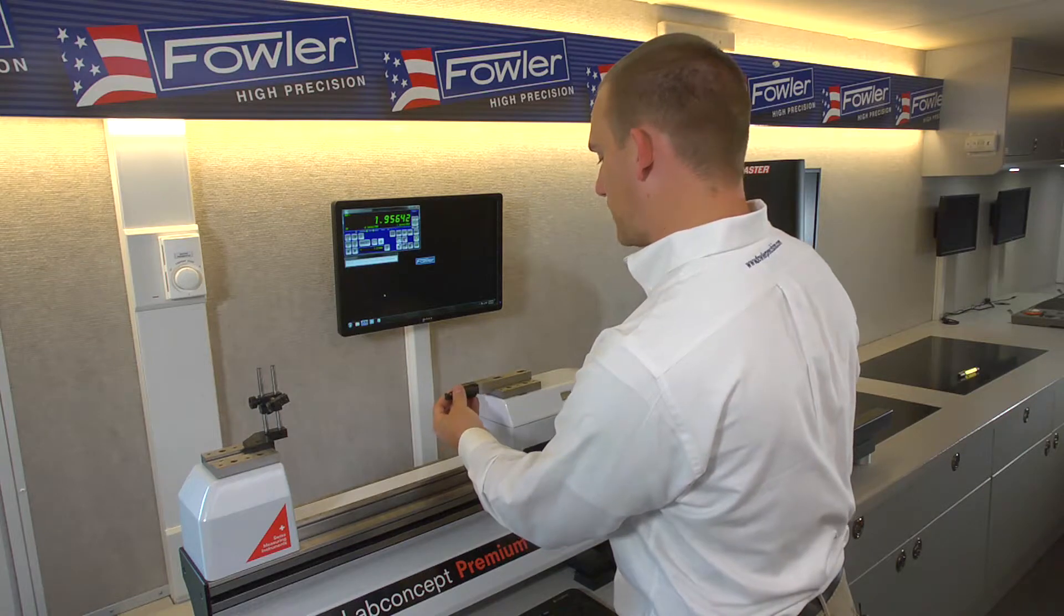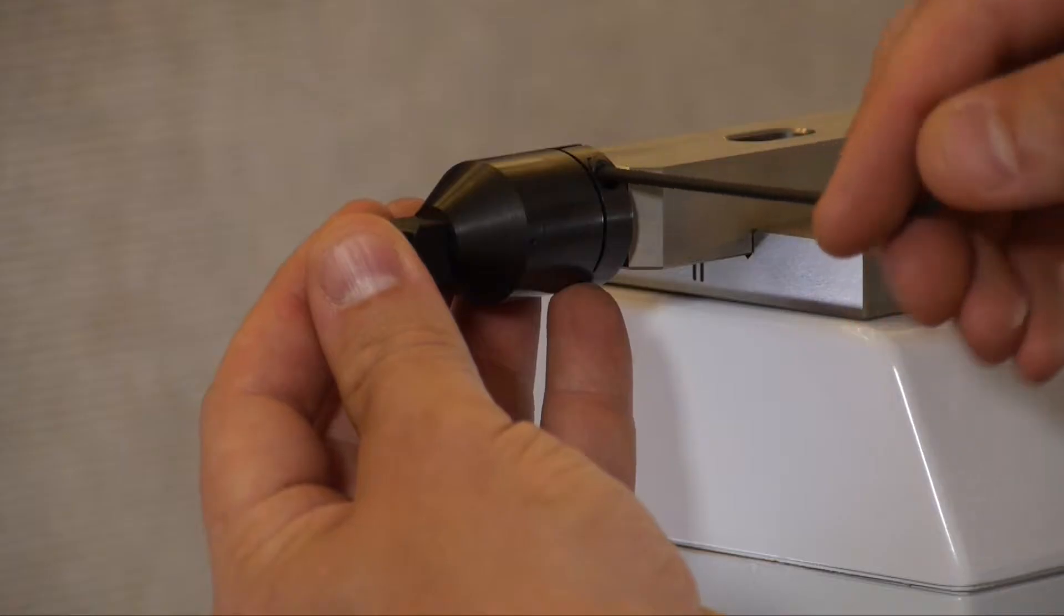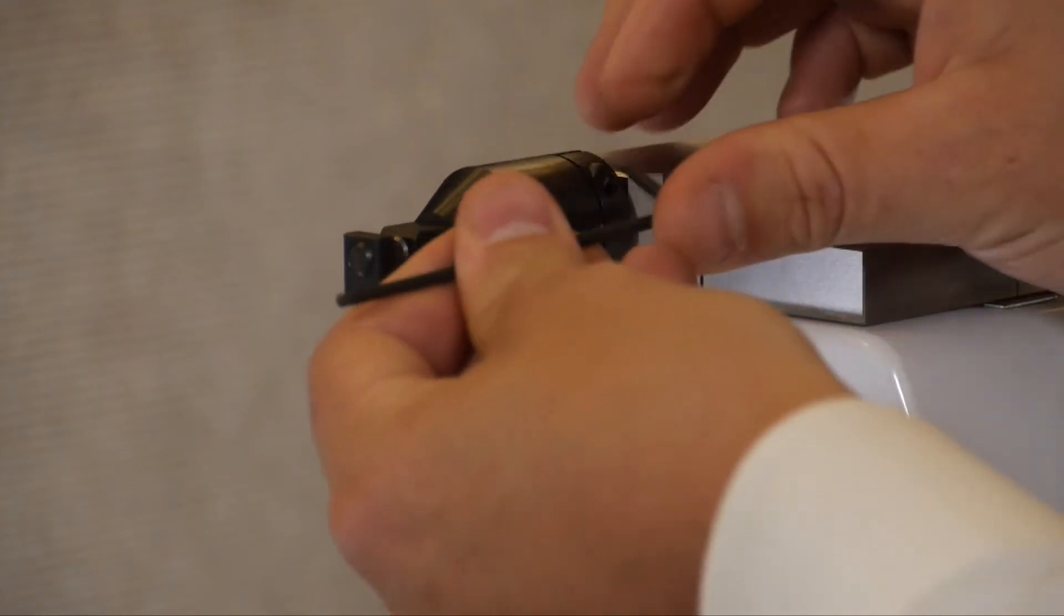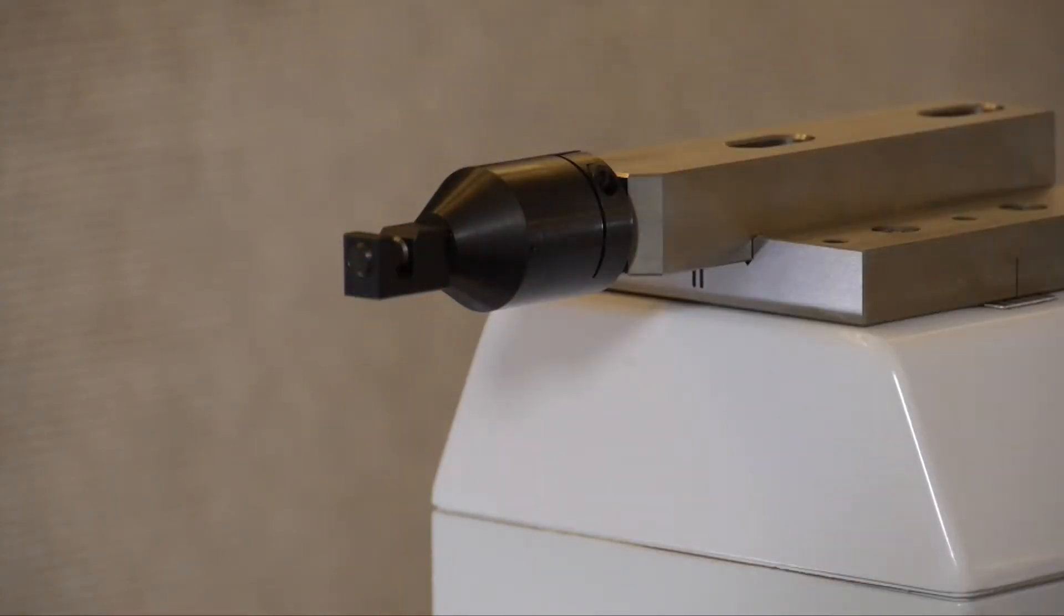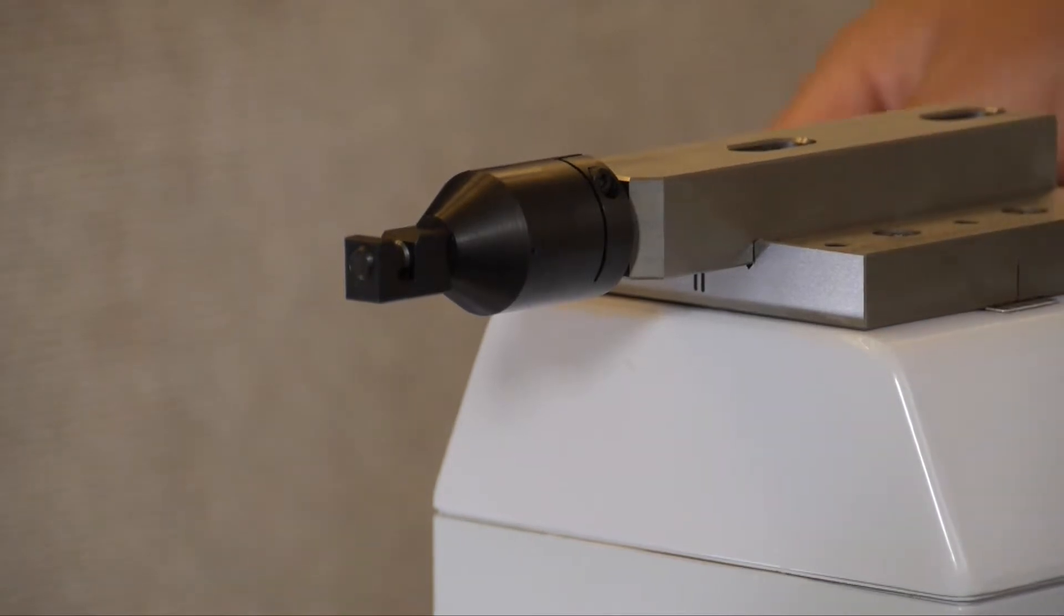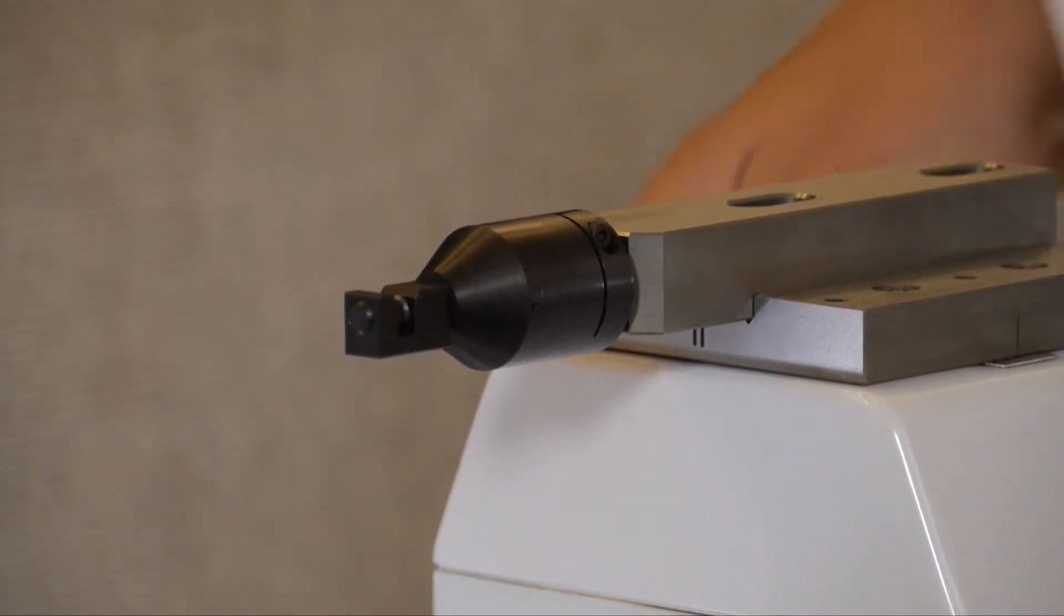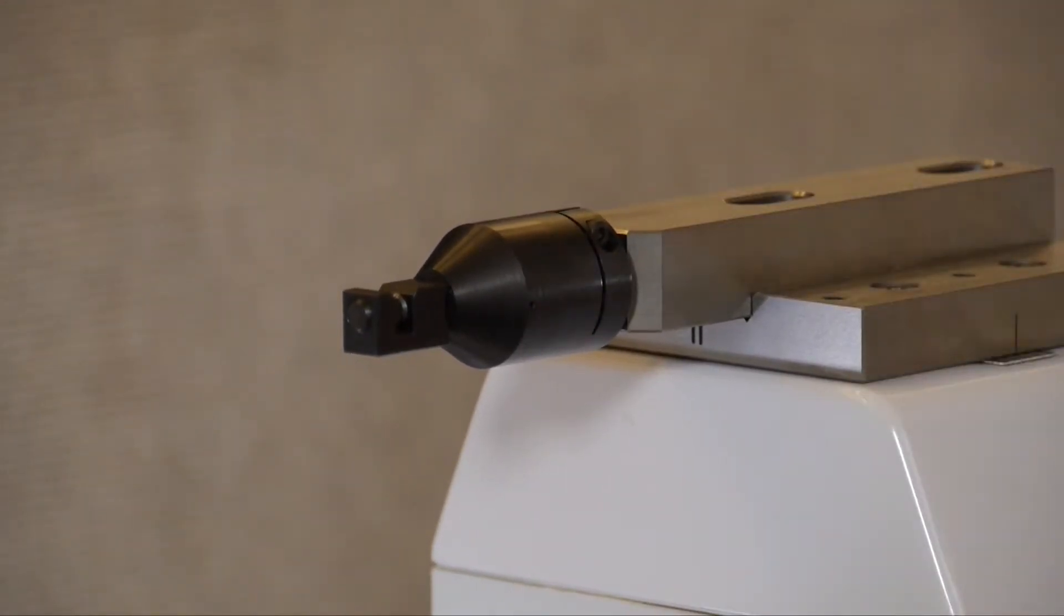So this just slides over top here and locks in place with a two and a half millimeter allen key like so. As with the other indicator style you want to make sure that this part of your carriage, the spring-loaded part, is locked down.